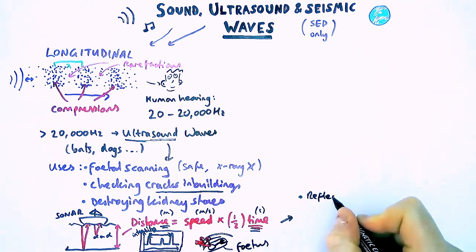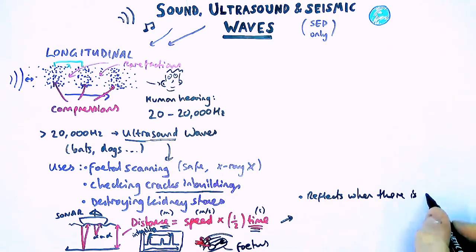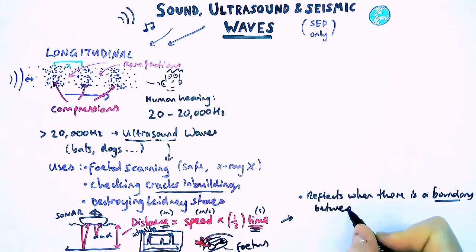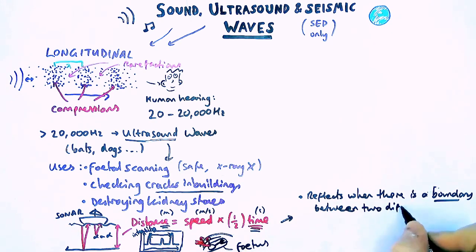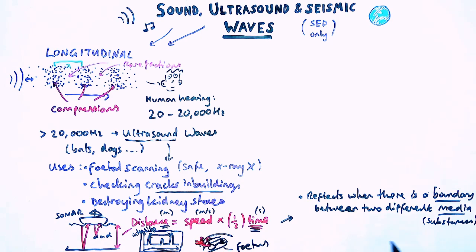So how would you write this in an exam question and answer? Will it be the same for all three, all those uses really, for sonar, for fetal scanning, checking cracks in buildings? The wave will reflect or bounce off when there is a boundary between two different media. Now media is the plural for medium. It's just a fancy physics word meaning a substance. So you can usually say substance here, that's fine, but you'll find textbooks will say media.